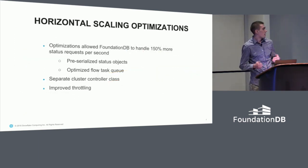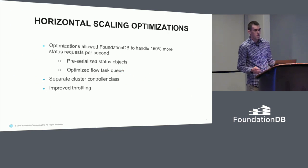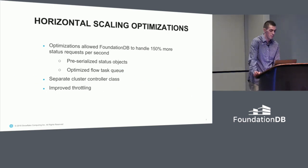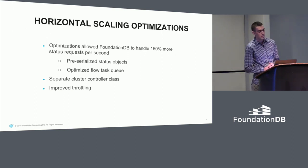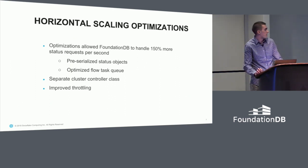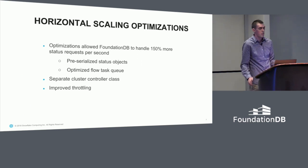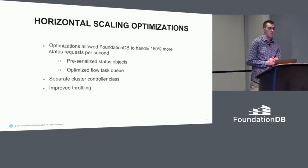These tests and observations led to a series of optimizations to help make the cluster controller more efficient. With these optimizations we were able to handle an additional 150% more status requests per second. The optimizations included pre-serialization of status objects and some low-level optimizations to the flow task queue.